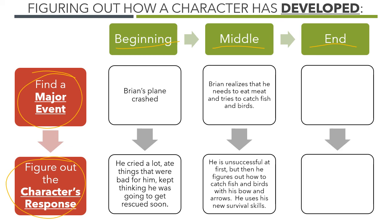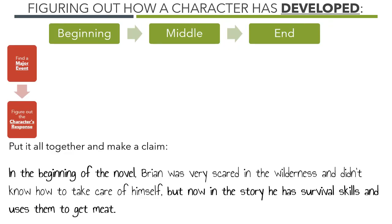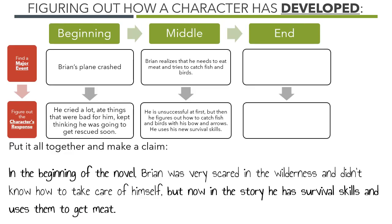Right now we have a blank box at the end because we haven't finished the book. At this point in Hatchet we are able to see how Brian is developing, but he's not done yet. We have the beginning and the middle, but we're going to keep an eye out for how Brian has changed by the end. After we do that, we can put all of it together to make a claim. After I have thought about what's a major event and what's my character's response and looked at different points in the story, I can make a claim.